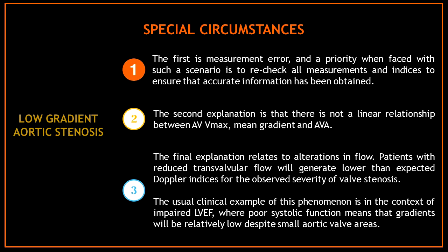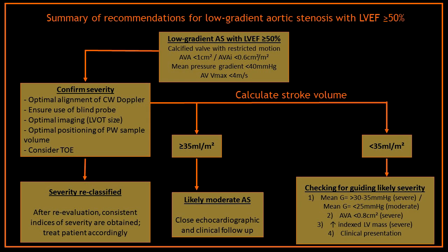The usual clinical example of this phenomenon is in the context of impaired left ventricular ejection fraction, where poor systolic function means that gradients will be relatively low despite small aortic valve areas. We already know that in patients with reduced left ventricular ejection fraction, we will have lower transvalvular flow than expected. The challenge is when we encounter low gradient aortic stenosis with preserved ejection fraction.